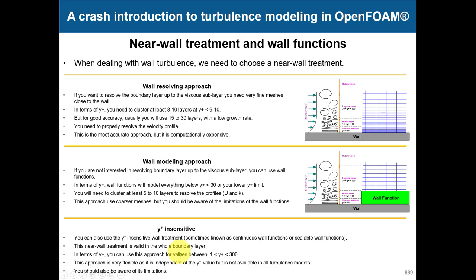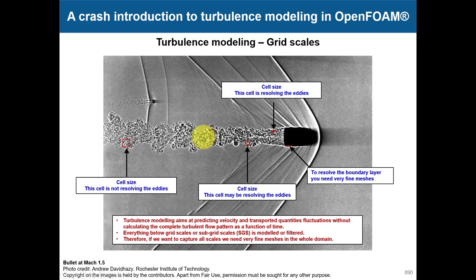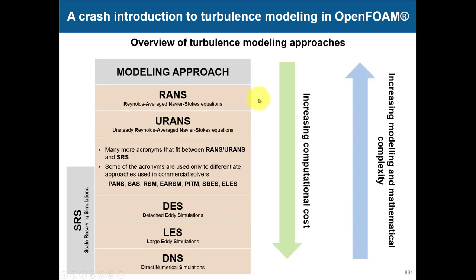Not every turbulence model is y+-insensitive. The mesh is very important in turbulence models - you resolve the scales that you can capture. Far from the body you capture only the largest scales; to see the smallest scales you need finer meshes. Grid scales are the scales that need to be modeled; grid-size scales are what you can capture with your mesh.